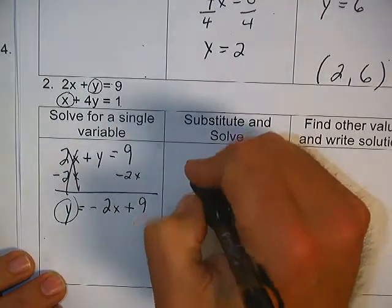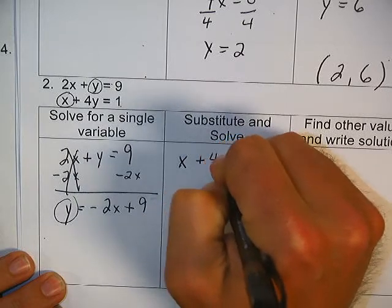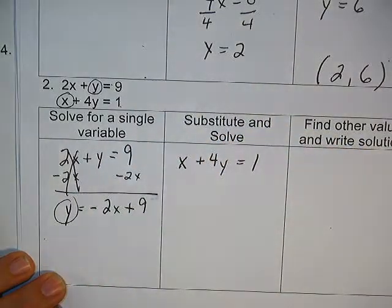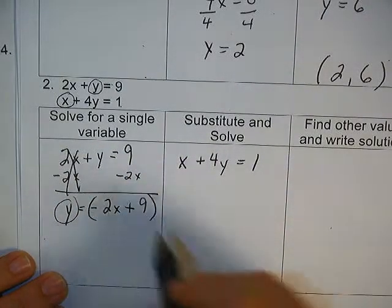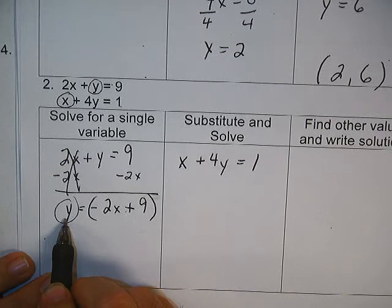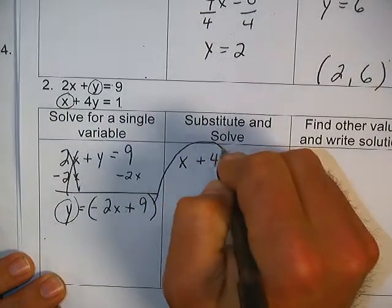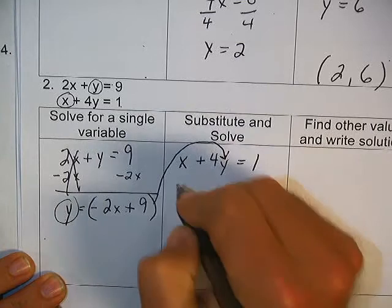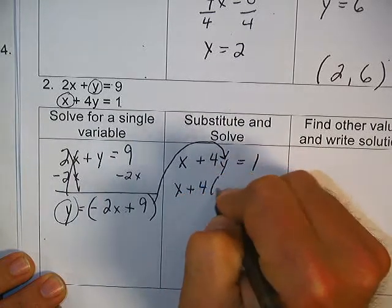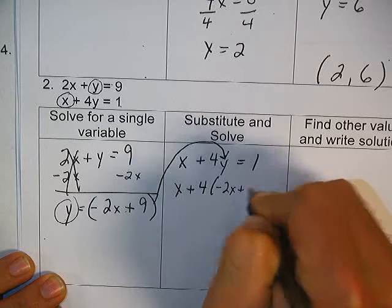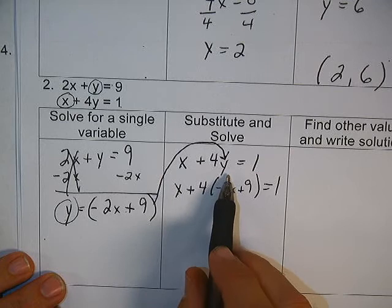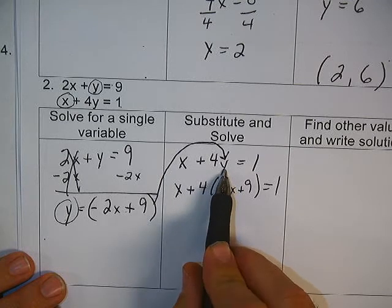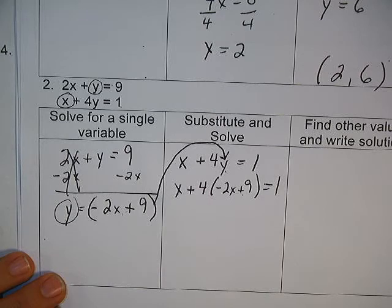Just like the first problem, take the other equation and substitute this negative 2x plus 9 in for y. So we have x plus 4 times the quantity negative 2x plus 9 equals 1. The only thing that changed is where it said y, we put negative 2x plus 9.